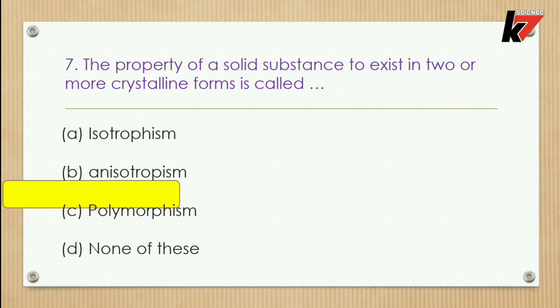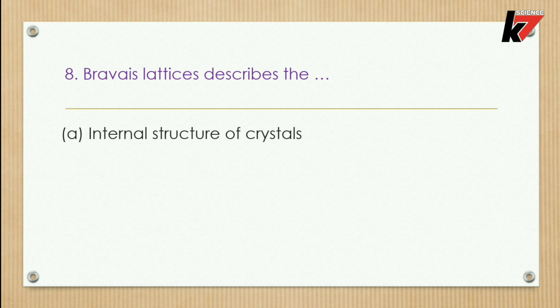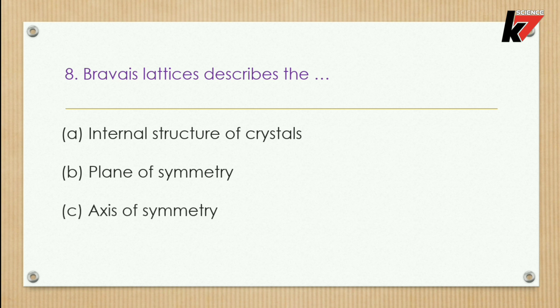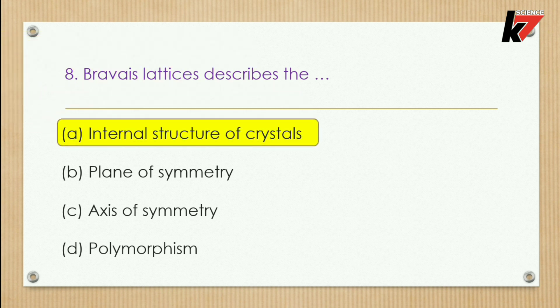Question 8: Bravais lattices describe — options: internal structure of crystals, plane of symmetry, axis of symmetry, or polymorphism. The correct option is internal structure of crystals; Bravais lattices describe the internal structures of crystals.